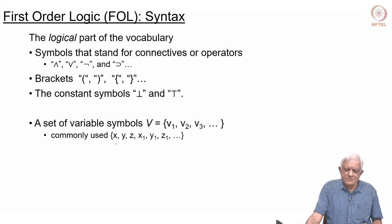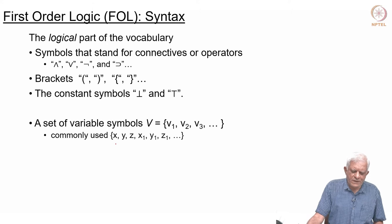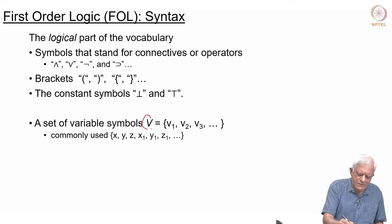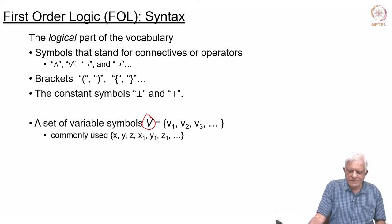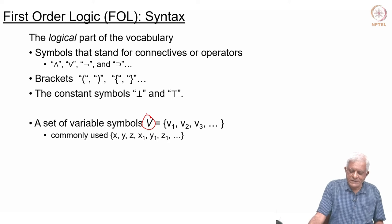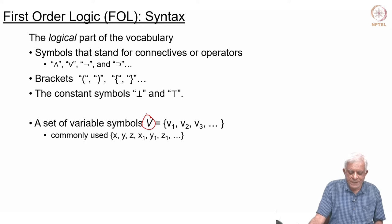Apart from that we have a set of variable symbols, which we will call this set V. Basically this is a set of symbols and each of them is a variable symbol essentially. So we can say v1, v2, v3, or you can say x, y, z, or x1, y1, z1, and so on.